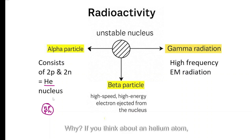Why? If you think about a helium atom, you have two protons, two neutrons and two electrons. Now if you get rid of these two electrons, you are left with the nucleus which is identical to an alpha particle. So two protons and two neutrons.